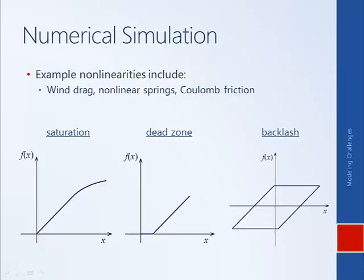A final type of nonlinearity shown here is called backlash, which is also representative of a system that has hysteresis. An example would be two gears meshing — the two gears have some play, so the input gear may move a little bit before it engages and starts to drive the output gear. If you drove the input gear in the opposite direction, it would again have to move a certain distance before engaging the output gear. The system behaves differently moving in one direction than in the other.